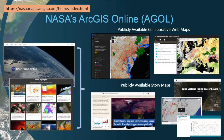NASA also utilizes Esri's ArcGIS Online, which is a collaborative web-based GIS that allows users to create and share data, layers, maps, applications, and analytic products. We have over 1,700 content items that are publicly available, ranging from web services, dashboards, notebooks, and story maps.